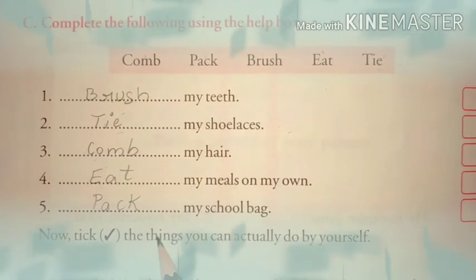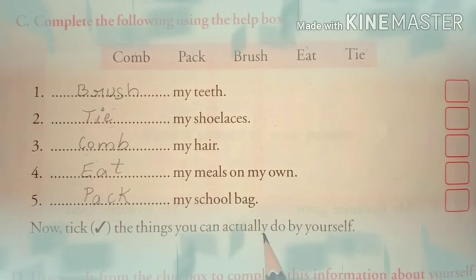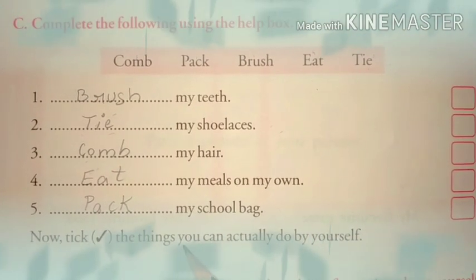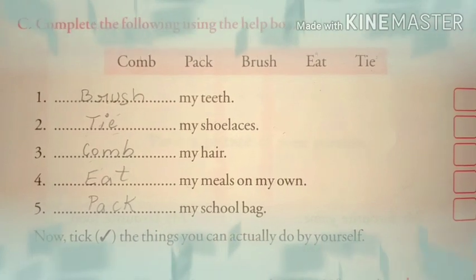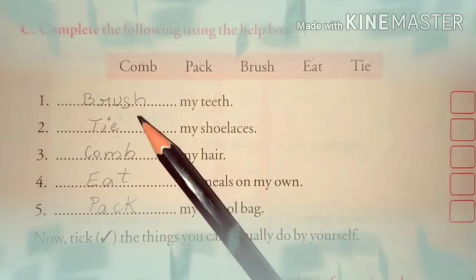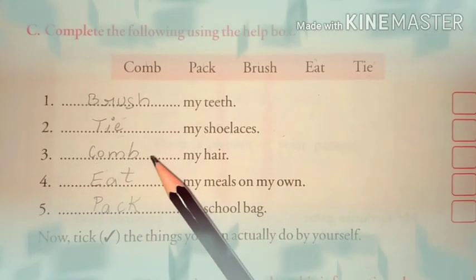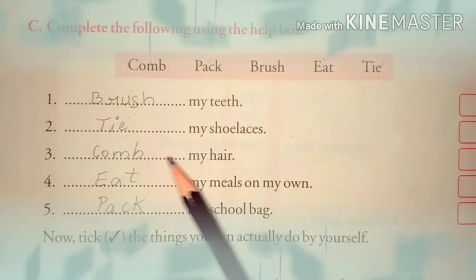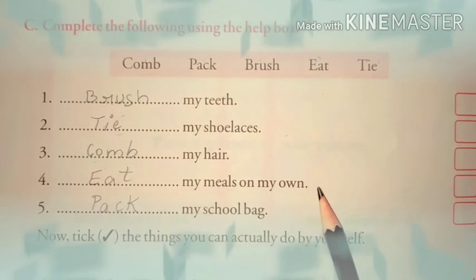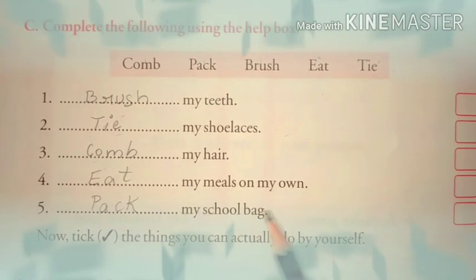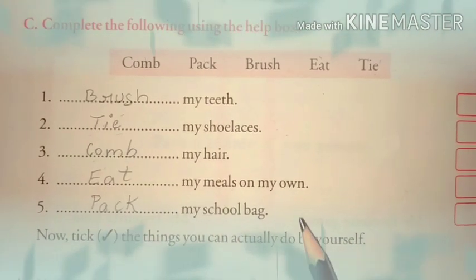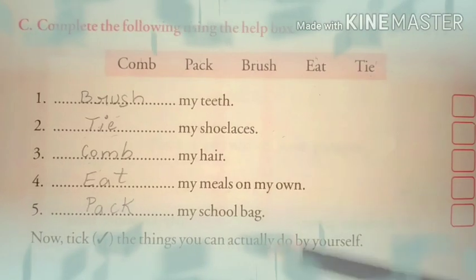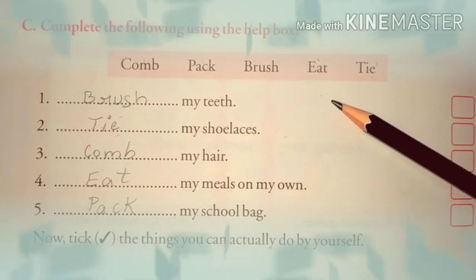Now, tick the things you can actually do by yourself. Children, you have to tick the things that you can do by yourself — brush my teeth, tie my shoelaces, comb my hair, eat my meals on my own, pack my school bag. Tick the things that you can do by yourself without anyone's help.